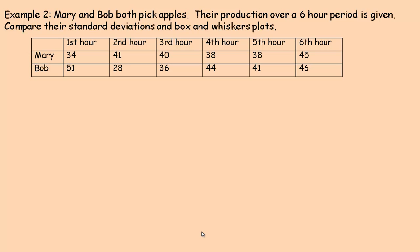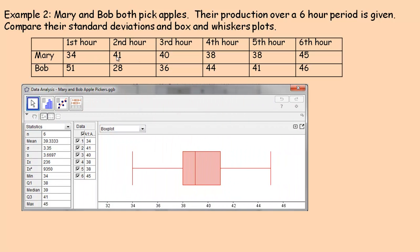Standard deviation is a measure of spread. The larger the standard deviation, the more spread out the data is; the smaller the standard deviation, the more condensed it is around the mean. Mary and Bob both pick apples, and their production over a six-hour period is given — just a sample, not the whole population. We're asked to compare the standard deviations and box-and-whisker plots. I used GeoGebra to enter the data. Mary's sample standard deviation is about 3.67, and here's Bob's.